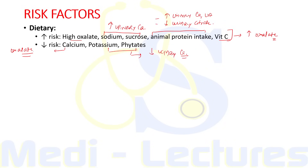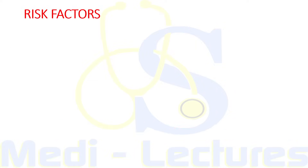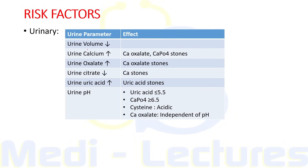Regarding fluids and beverages, increased risk of renal calculus is with sugar-sweetened beverages, and decreased risk is with tea, coffee, beer, and wine due to their diuretic effect. For urinary risk factors, decreased urinary volume less than one liter per day is associated with two times increased renal stone risk. Increased urinary calcium leads to calcium oxalate and calcium phosphate stones. Increased urine oxalate leads to calcium oxalate stones. Decreased urine citrate also leads to calcium stones as it avoids crystallization of calcium.